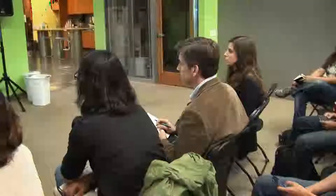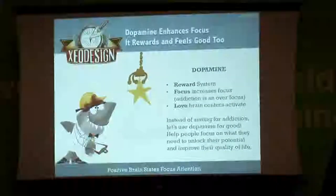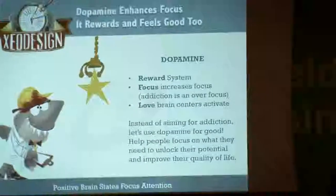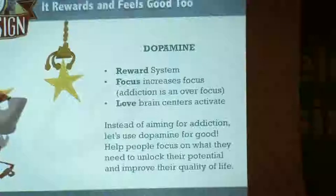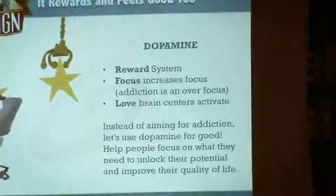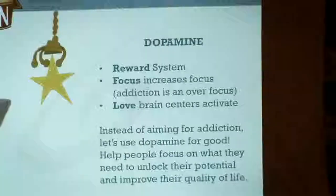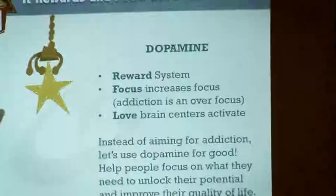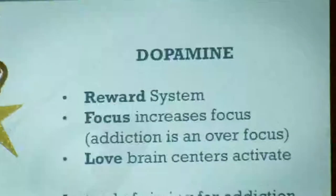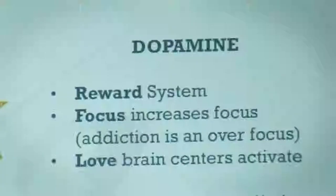One way to improve engagement — one way to get people riveted to the screen — is to add dopamine. What could we do to create a positive, engaged brain state? Dopamine is the reward chemical in the brain. Not only does dopamine reward the brain system, but it also increases focus, and it's also released in love. Those brain centers involved in love also release dopamine, so there's this really interesting thing beyond just rewarding the player.